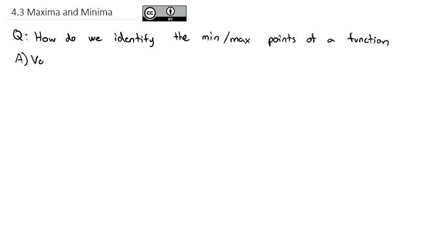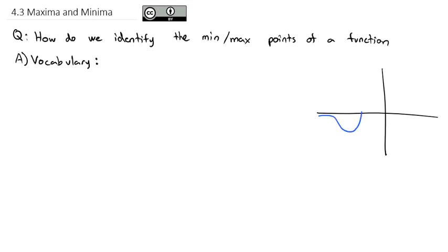To set this up, there's a little bit of vocabulary we need to be familiar with as we work with this concept. To help us visualize the vocabulary, I'm going to put a function here. It's going to start at 0, come down, come up really high, go down really low, come up a little bit, and then go towards an asymptote at 0.